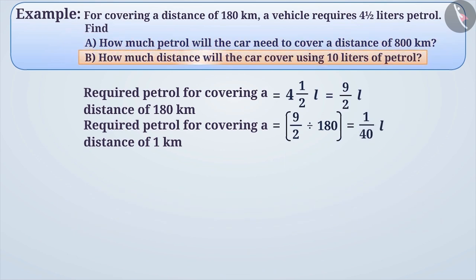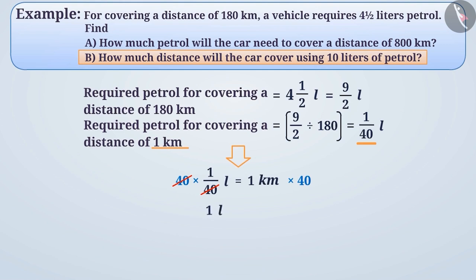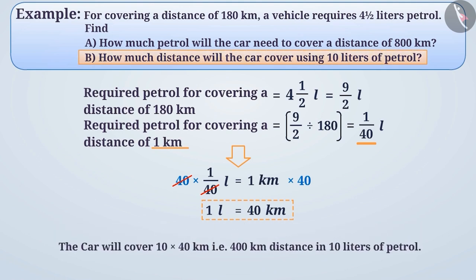Let's find out how much distance this vehicle will cover in 10 litres of petrol. As we can see, the vehicle will cover 1 km distance in 1/40 litres of petrol. If we multiply both sides by 40, then we get to know that the vehicle will cover 40 km distance in 1 litre of petrol. Similarly, the vehicle will cover 10 into 40 km, that is 400 km, in 10 litres of petrol.